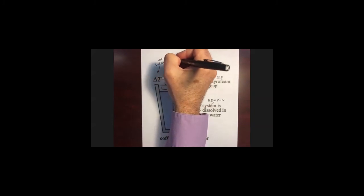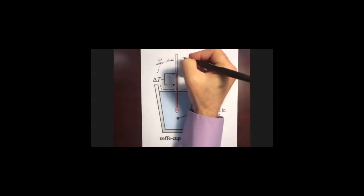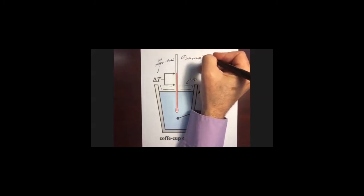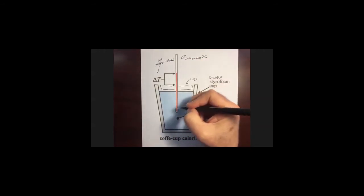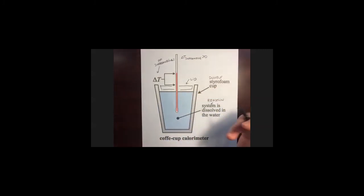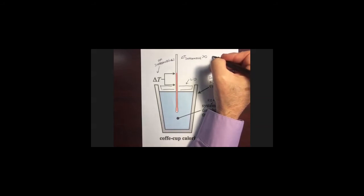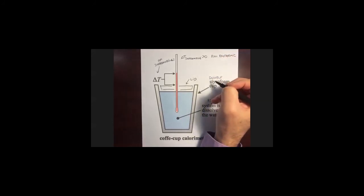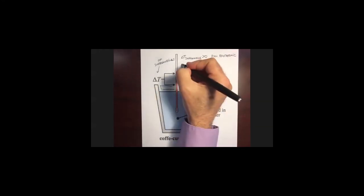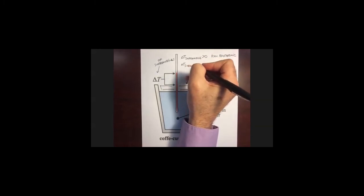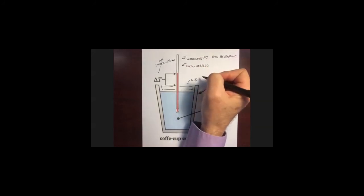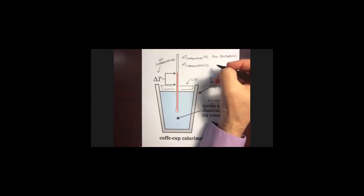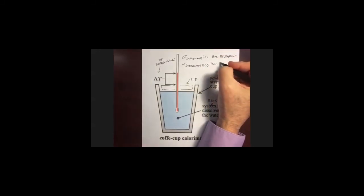If the temperature change of the surroundings is positive — in other words the temperature increases — that means the solution and calorimeter absorbed heat from our system, meaning the reaction is exothermic. If delta T of the surroundings is negative — the temperature goes down — that means our system absorbed thermal energy from the surroundings, which means the reaction is endothermic.